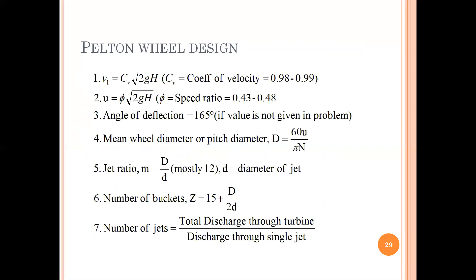Now coming to some design steps of Pelton wheel. Firstly, your velocity is dependent on the head available, so v1 = sqrt(2gH). Adding a coefficient of velocity, v1 becomes the actual velocity: v1 = Cv * sqrt(2gH), where Cv ranges from 0.98 to 0.99. Your u — speed of the bucket — is written as phi * sqrt(2gH), where phi is the speed ratio ranging from 0.43 to 0.48. The angle of deflection, if not given, is assumed to be 165 degrees.